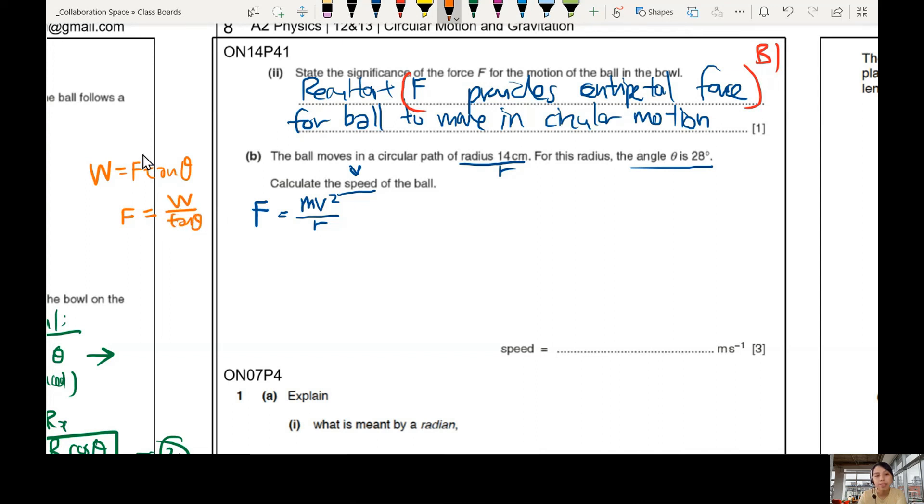Okay, so let's plug it in. From the previous part, W over tangent theta is our good old MV square over R. Now we can plug in everything. Good. Okay. Wait, wait, wait, wait. W is mg. So mg over tangent theta equals to MV square over R.